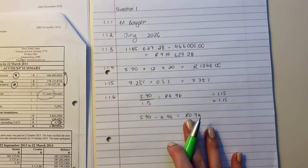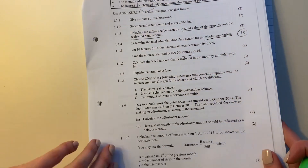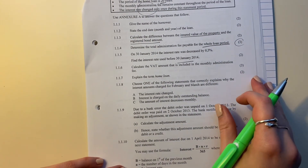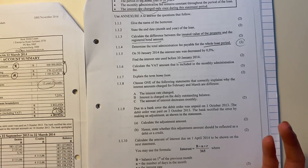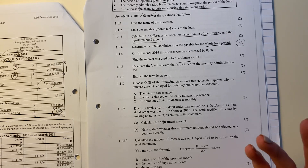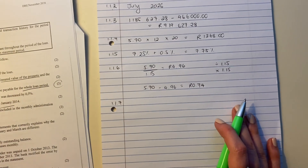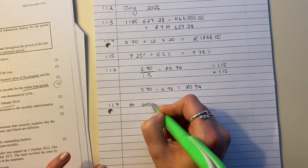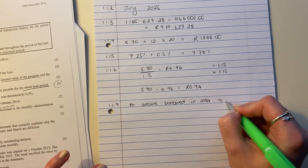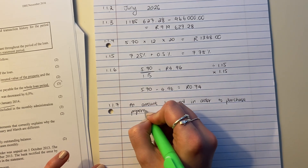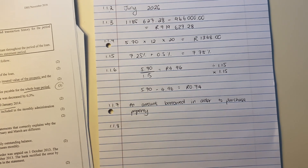Moving on to 1.1.7, which says explain the term 'home loan.' Remember, the first question of a paper is not generally too difficult — it's where you get a lot of marks, so don't rush through. A home loan is an amount borrowed from the bank in order to purchase property — a house, a flat, etc. You need to state that it is an amount, because that indicates it's money, borrowed in order to buy property.